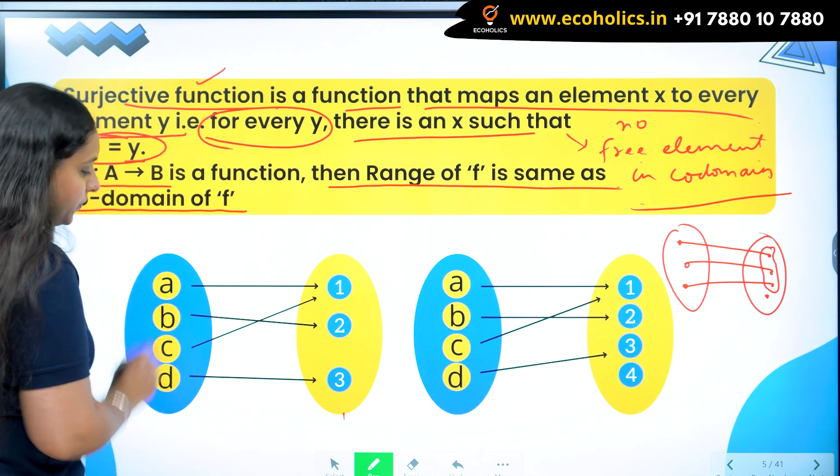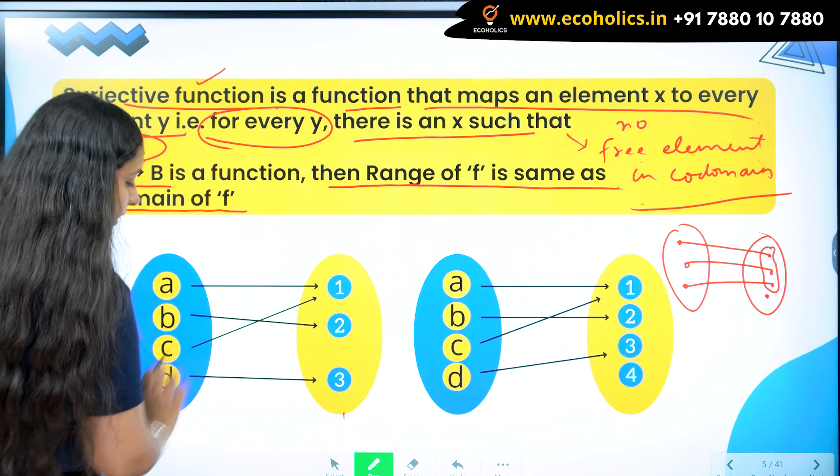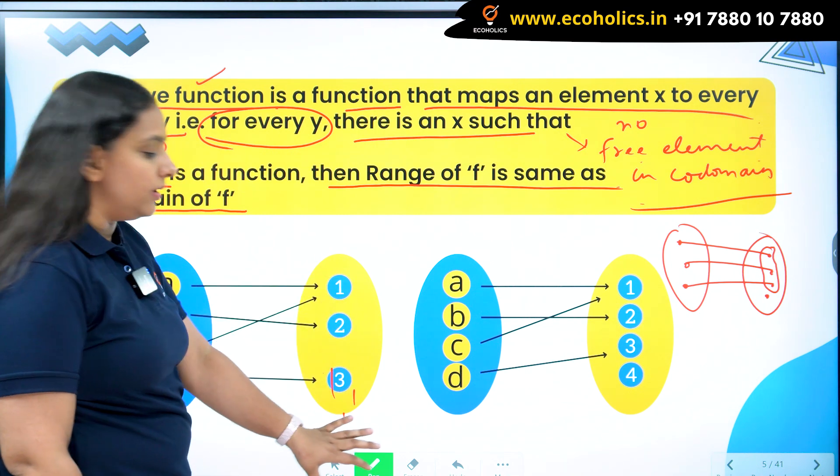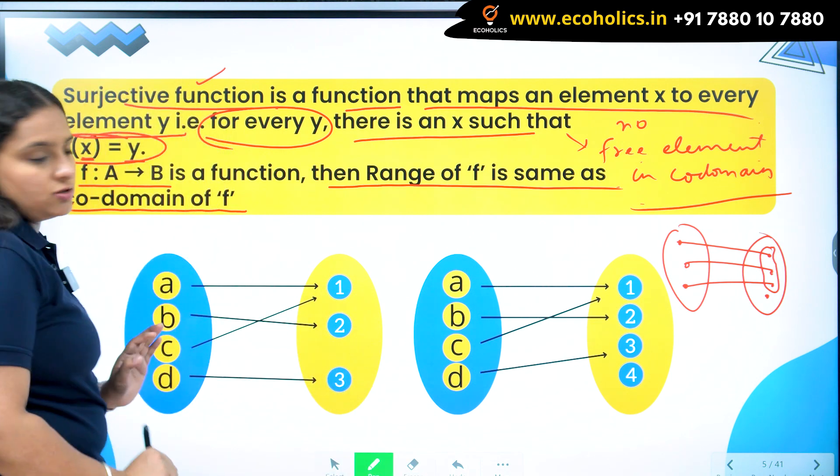As you can see here, at this place, a is going to 1, b is going to 2, c is going to 1, d is going to 3. No free element here. Range and co-domain are exactly equal. So this function is surjective.